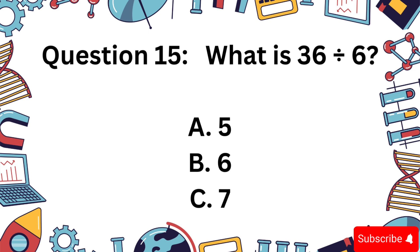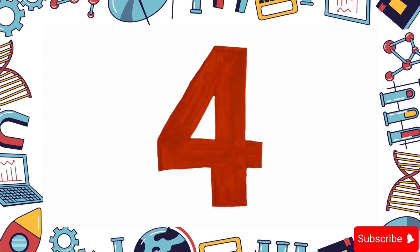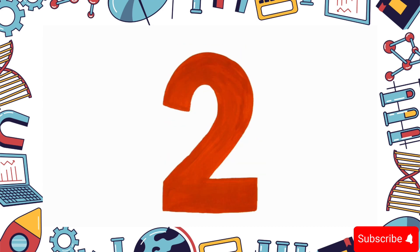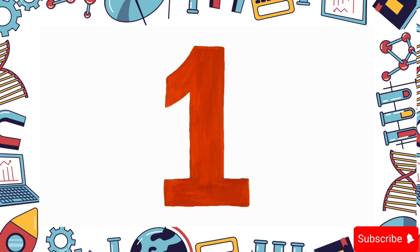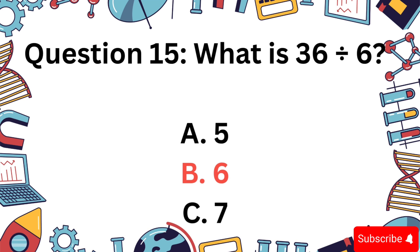36 divided by 6. A, 5, B, 6, C, 7? The correct answer is B, 6.